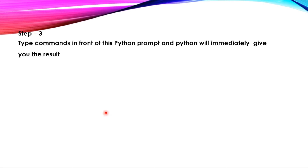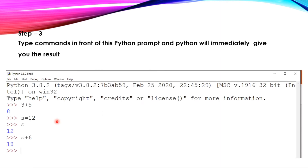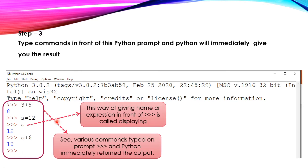Step 3: type a command in front of the Python prompt and Python will immediately give you the result. In this screenshot you can see different types of commands. For example, if I write 3 plus 5, it will give me directly the output 8. Here in the example, you can see S equals 12 — I am giving a value to the variable that will store this value. So whenever I write S, it will give me output as 12. And then S plus 6: since S has the value 12, it will give you 12 plus 6, which equals 18. This is how you can work with Interactive mode of Python step by step.